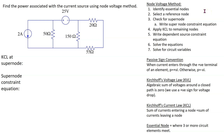In this example we will look at how to deal with a super node when applying the node voltage method. A super node can arise due to a voltage source connected between two essential nodes. Let's apply the node voltage method to this given circuit and see how to deal with a super node.